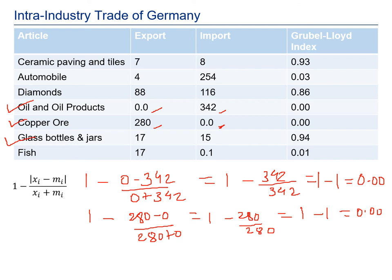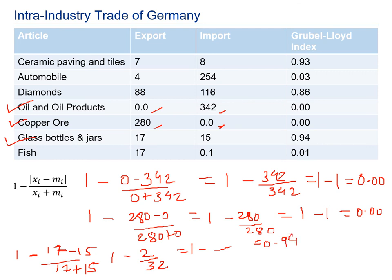For glass bottles and jars: exports are 17 and imports are 15 — very close. Applying the formula: 1 − |17 − 15| / (17 + 15) = 1 − 2/32. Dividing 2 by 32 gives approximately 0.0625, and subtracting from 1 gives an answer of 0.94, which is near to 1 as expected when exports and imports are similar.